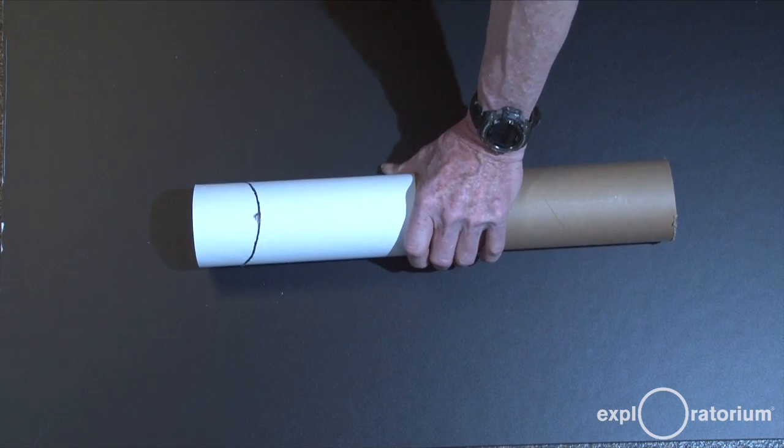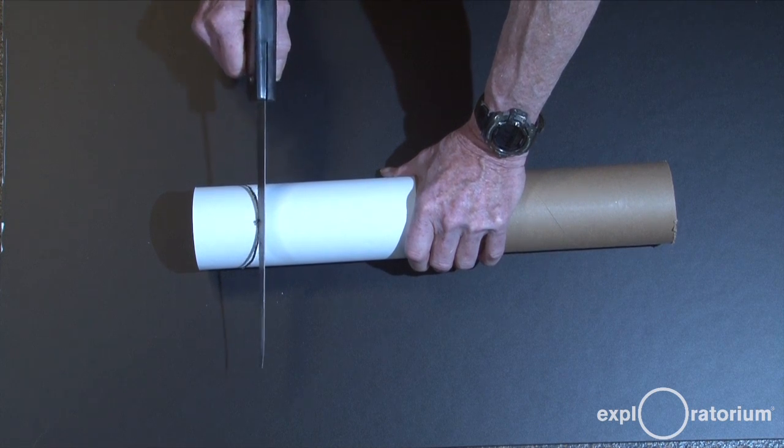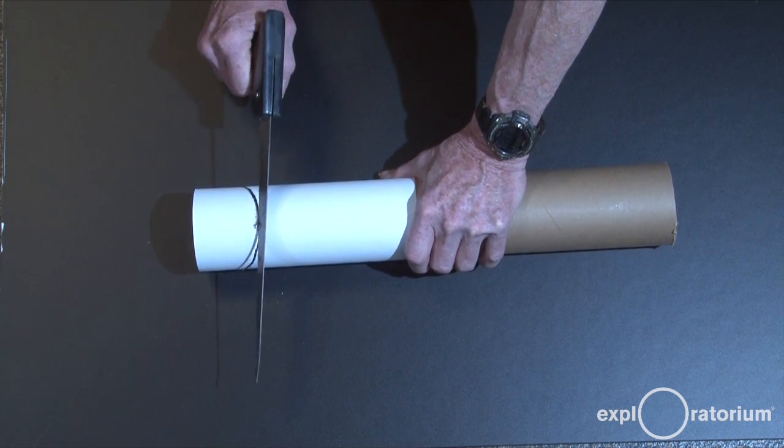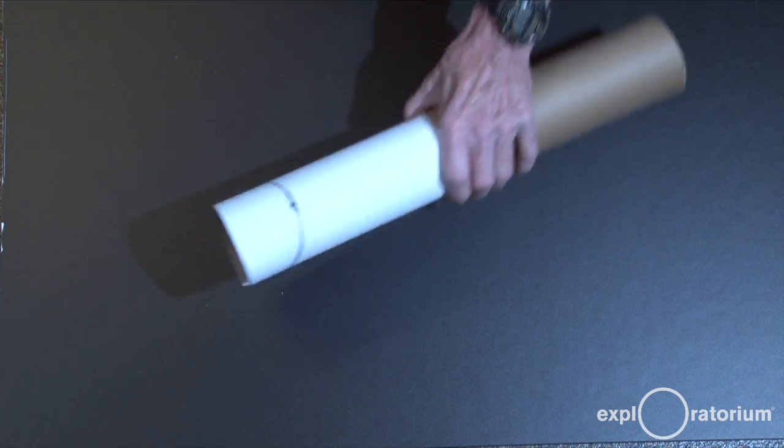To cut the slot, put it securely on a surface. Bring in your saw and cut slowly and carefully along the marked line. When you've cut all the way down, you're ready to insert the compact disc.